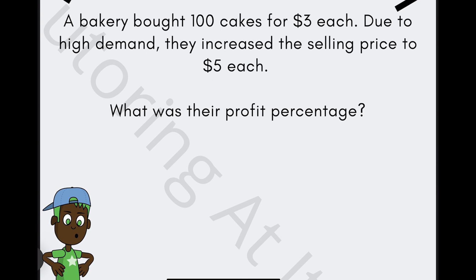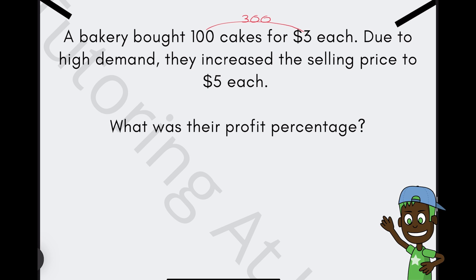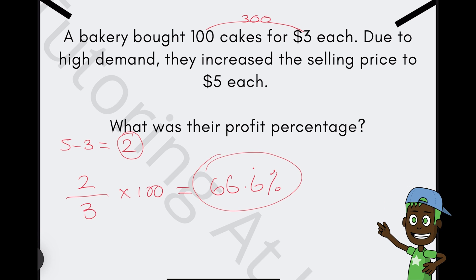A bakery bought 100 cakes for $3 each. So instantly you would know that's $300. And due to the high demand, they increased the selling price to $5 each. So all we need to do is calculate our profit firstly, which is 5 take away 3, which gives us $2 on each cake. Now then, in order to calculate that percentage profit, we'll have 2 divided by the cost price, and then we times that by 100. So we're left with 66.6 recurring, and that is our percentage profit. Marvelous. Let's go for the next question.